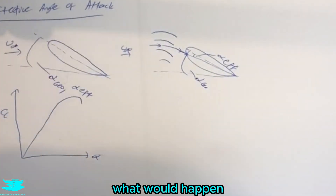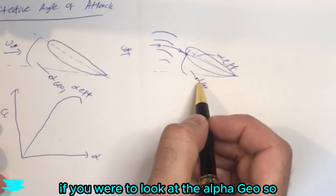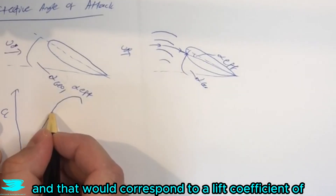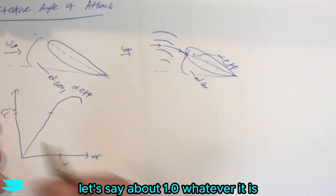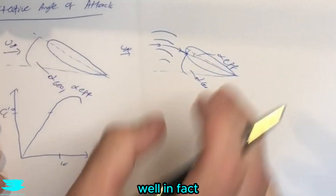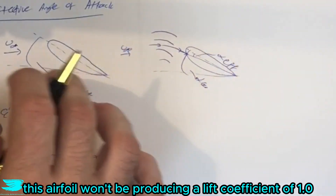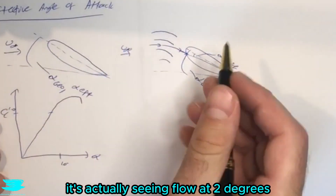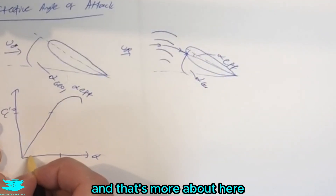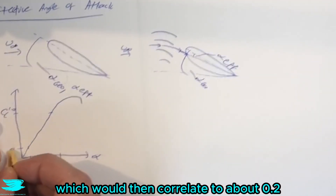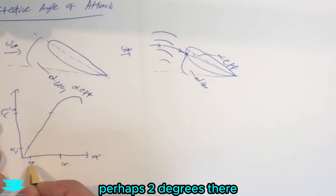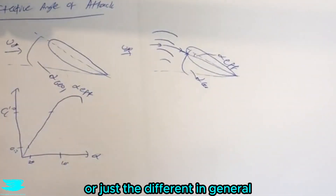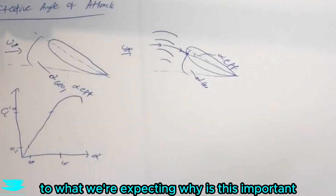So in terms of airfoil performance: if alpha geometric is 10 degrees that might correspond to a lift coefficient of around 1.0. But in fact this airfoil won't be producing a lift coefficient of 1.0 because it's not seeing flow at 10 degrees — it's actually seeing flow at 2 degrees, which would correspond to a lift coefficient of about 0.2. In reality the airfoil's performance is actually quite different from what we'd expect.